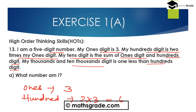My 10's digit is the sum of the 1's digit and 100's digit. The 1's digit is 3 and the 100's digit is 6, so 3 plus 6 equals 9. Therefore the 10's digit is 9.